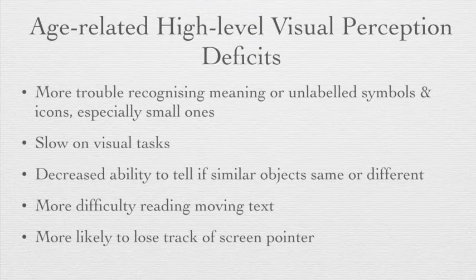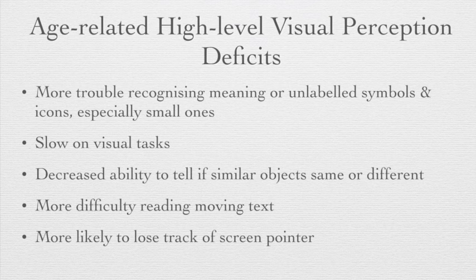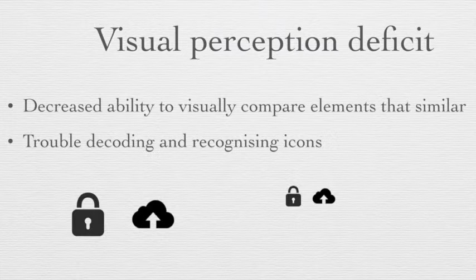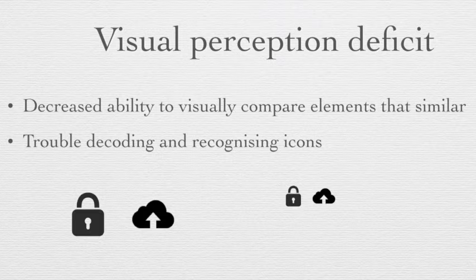Relating to high-level visual perception deficits: older adults have more trouble recognizing the meaning of unlabeled symbols, such as small icons. They are slower on visual tasks and have decreased ability to tell if similar objects are the same or different. They also have more difficulty reading moving text and are more likely to lose track of text on screen. For example, the screen lock icon can look quite similar to the upload file icon when small. As a result, you can add a label under the icon.